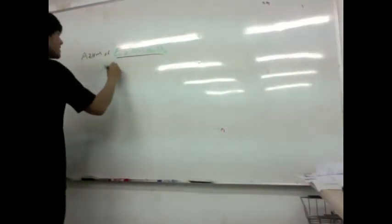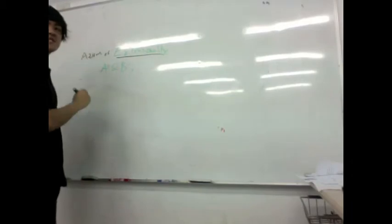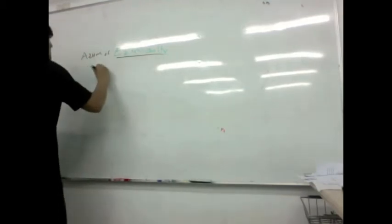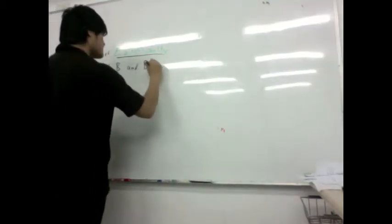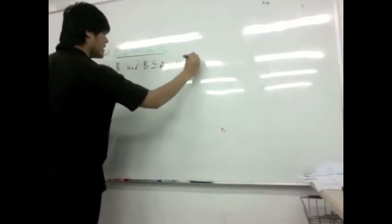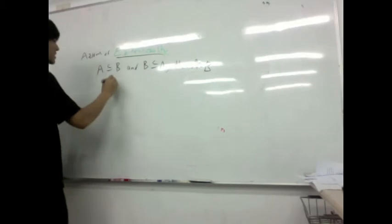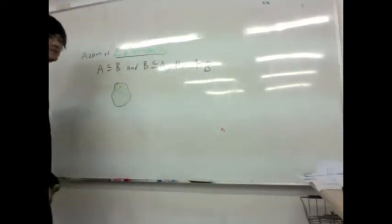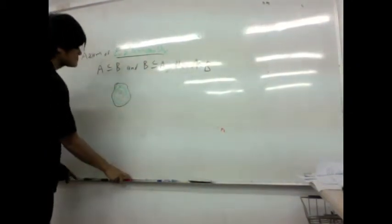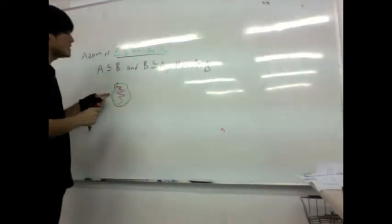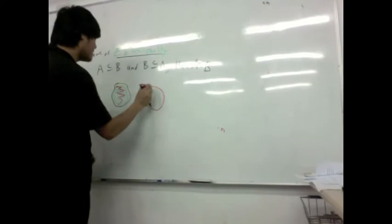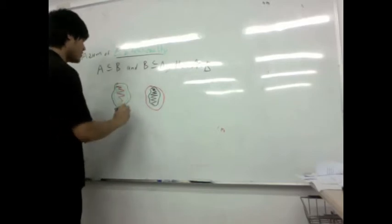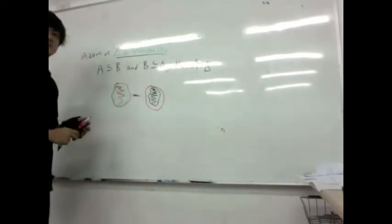If one set is a subset of the other set — if A is a subset of B and B is a subset of A — then A equals B. Very intuitive, very important. We know every element of one set is contained in the other, and the other is contained in this one. The only way for this to be possible is if they are both equal.